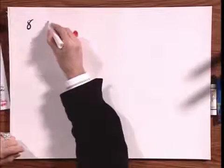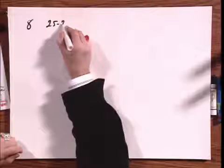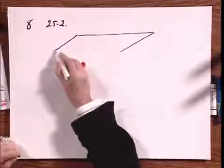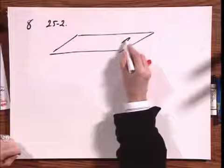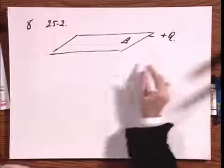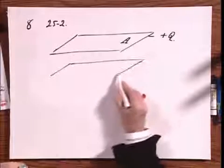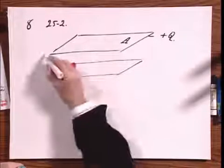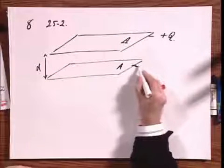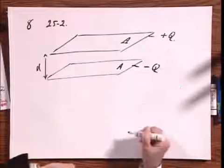This is number 8 and this is section 25.2. I have a huge plate with an area A and there is a charge plus Q on the plate. I have at a separation little d, same area A, and I have minus Q charge on this one.